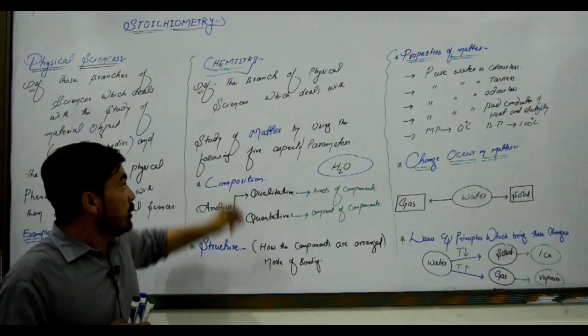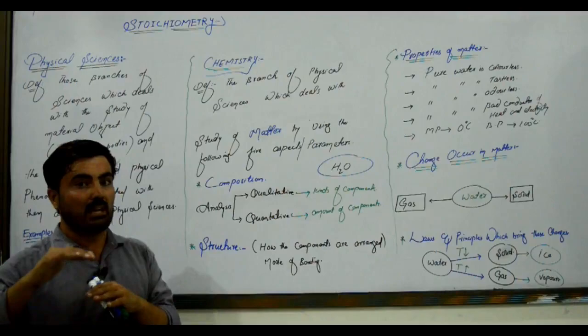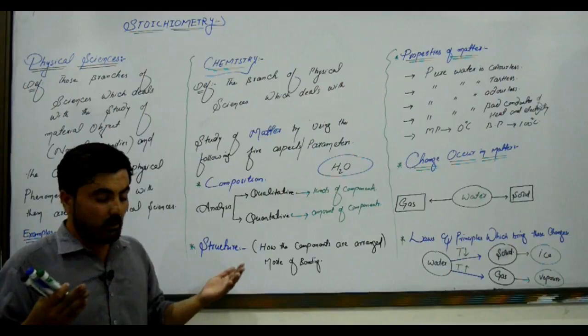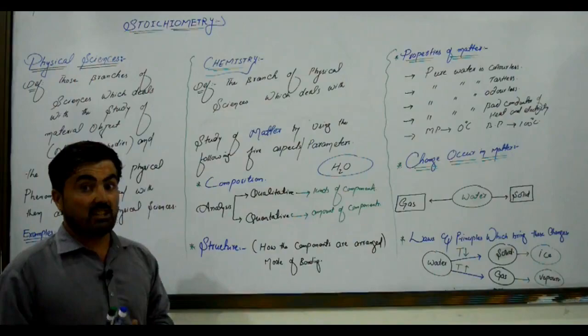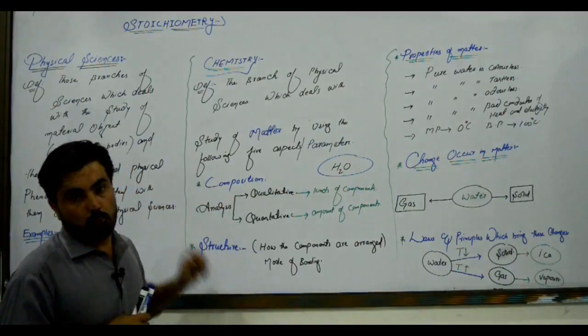In chemistry, we study matter in the universe using a specific strategy. We follow five key parameters to study matter. The first of these five aspects is composition.